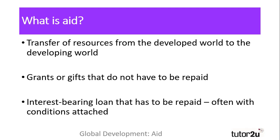What is aid? Aid, which is often referred to as official development assistance, is the transfer of resources from the developed world to the developing world. It can take many different forms and can be administered by different agencies of development.